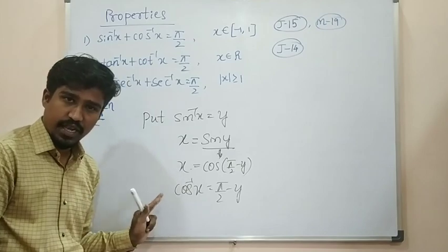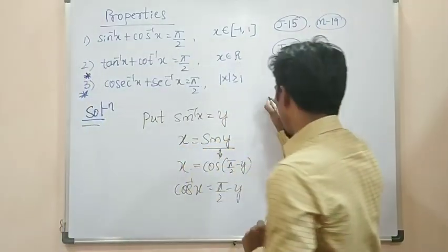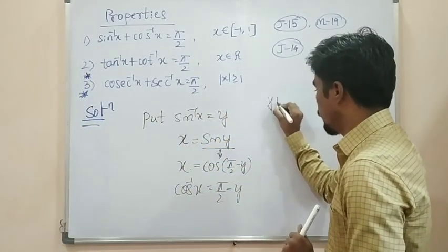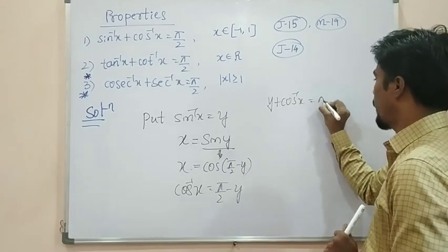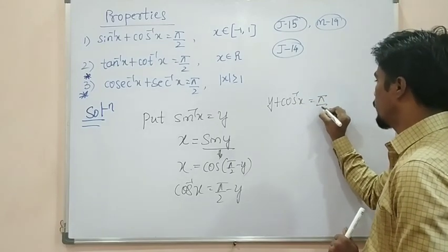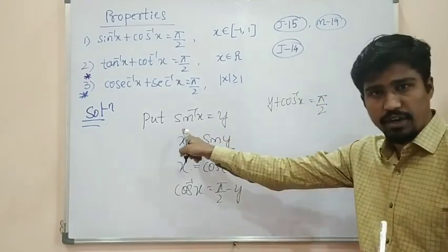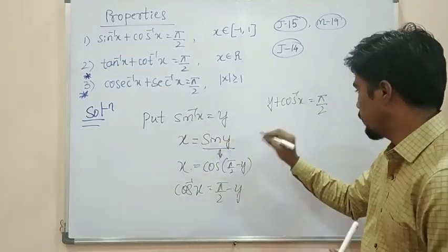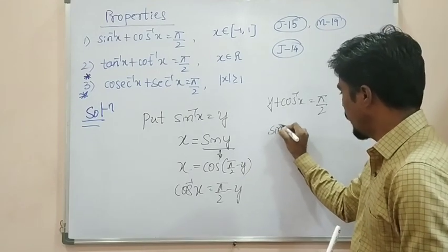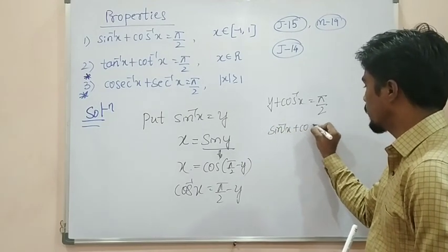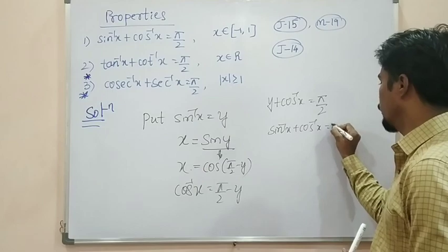From x is equal to cos(π/2 − y), applying cos inverse on both sides: cos inverse x is equal to π/2 minus y. Now shift minus y to the other side: y plus cos inverse x is equal to π/2. Since y is sin inverse x, substituting back gives sin inverse x plus cos inverse x is equal to π/2.